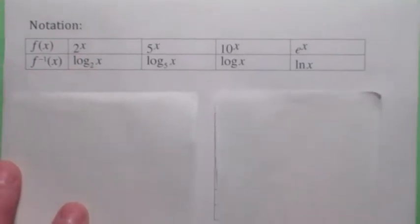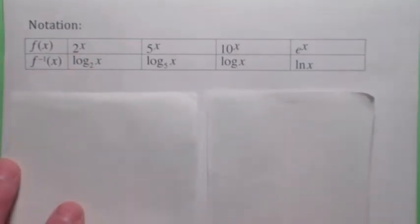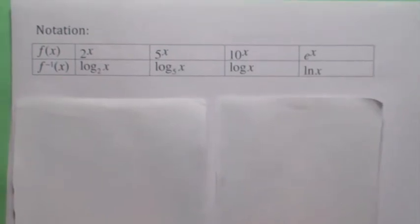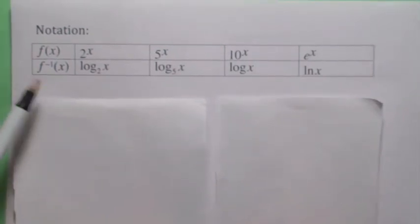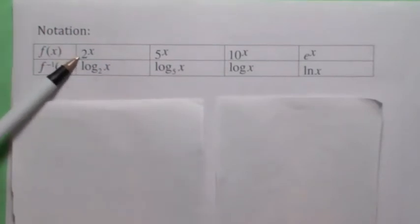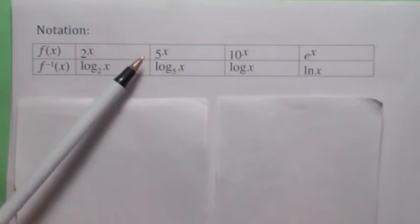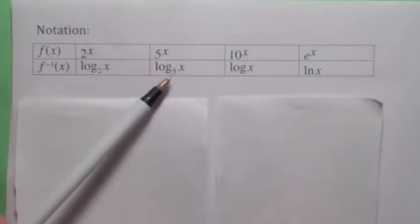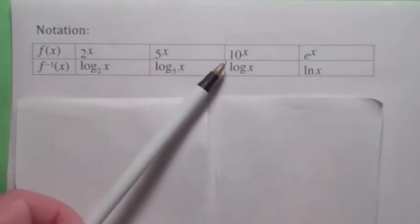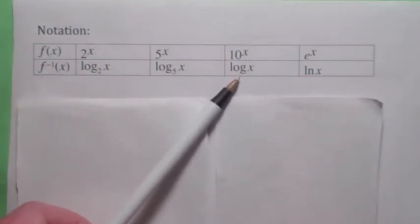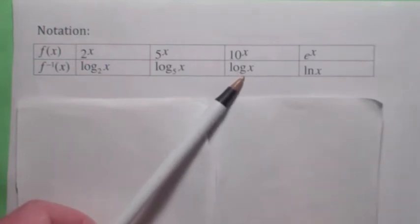A word on notation: there are infinitely many logarithm functions. For each exponential function there's a corresponding logarithmic function. If the exponential function is 2 to the x, the inverse log function would be log base 2 of x. If the exponential function is 5 to the x, the inverse would be log base 5 of x. If the exponential is 10 to the x, the inverse would be log base 10 of x, but we generally don't write the 10, so it would just be log of x — that means log base 10.